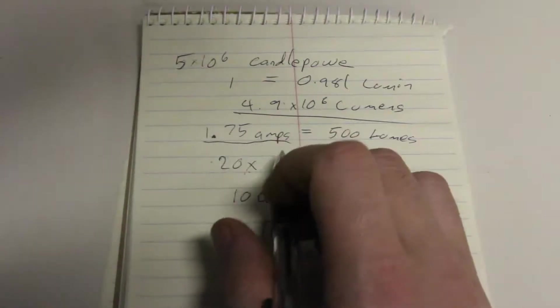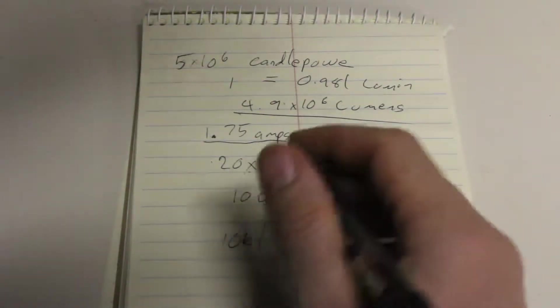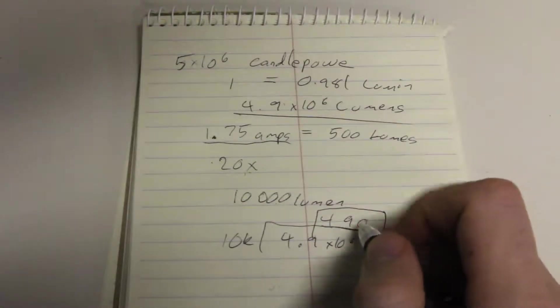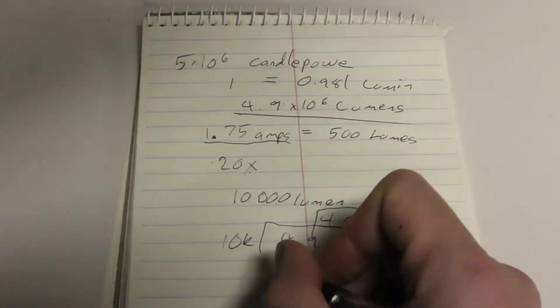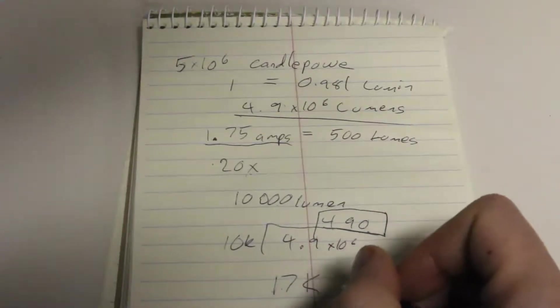So, if you take the 1.75 amps, you multiply it by the 20x increase in current, and then you multiply it by the 490 LEDs, you're going to end up with a little over 17,000 amps.